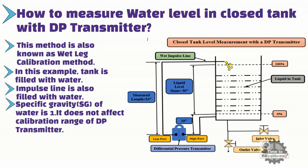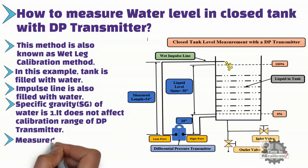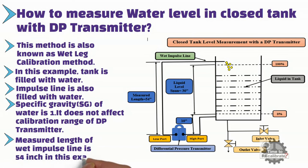As you can see from the picture, the wet impulse line is connected with the low port of the DP transmitter, and this impulse line is filled with water. The vertical height of the wet impulse line is also very important in closed tank level measurement, so measure the height of the wet impulse line very carefully. In this example, the measured height of the impulse line is 54 inches. There is a 30-inch distance between the zero percent baseline and the 100% level. Now we are all set for calculation of the calibration range.